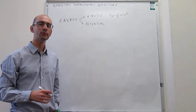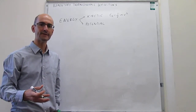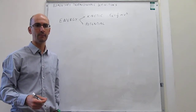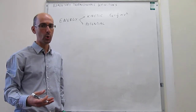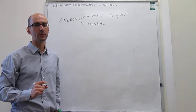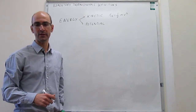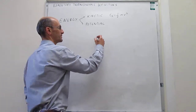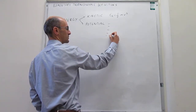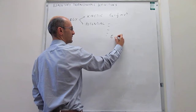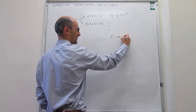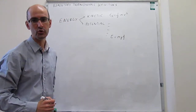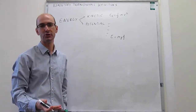Potential energy is more difficult to define because it comes in very many flavors, but essentially it's just due to position or composition. A typical type of potential energy that we're all familiar with is gravitational energy. There are many types of potential energy, but gravitational energy is simply mgh, where you can clearly see that that energy is due to your height or position.